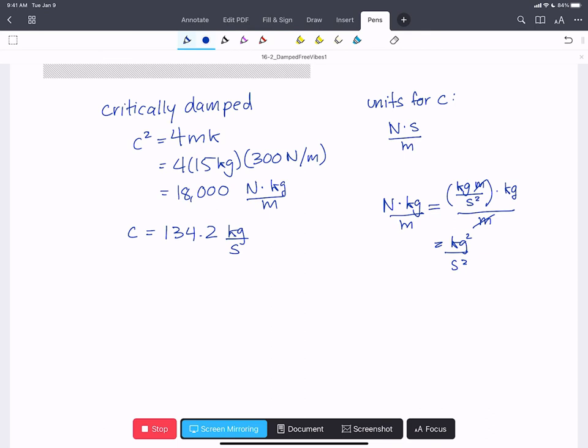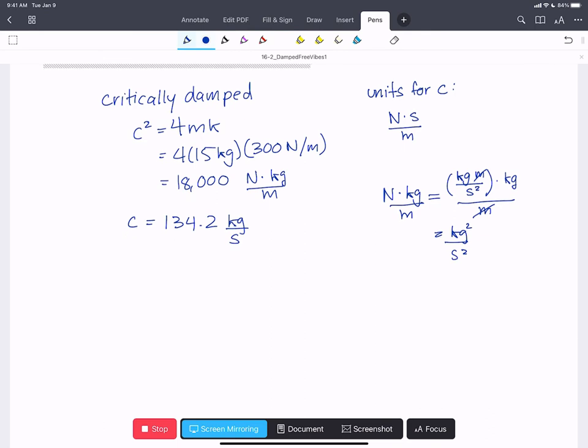That still doesn't look like our units, but we can actually remind ourselves that if newtons equals kilograms meters per second squared per meter, then kilograms equals newtons times seconds squared per meter. So we'll write our kilograms per second as newtons times seconds squared per meter all over seconds. Those cancel and we end up with our units of newtons times seconds per meter.